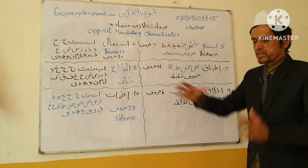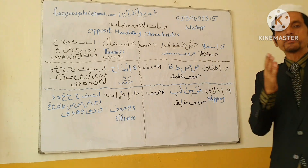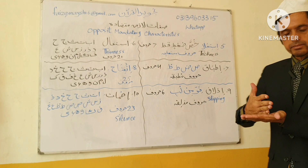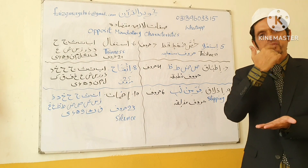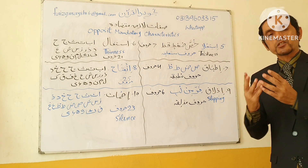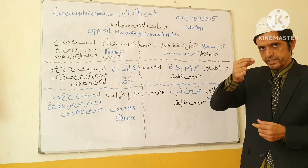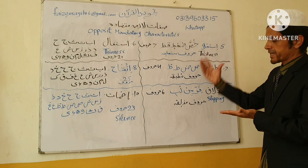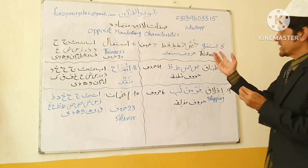Isti'ala is found in seven letters — the acronym is 'Khussah Doghtin': Kha, Swad, Daad, Ghayn, Ta, Qaf, Za. These are called Huroofi Musta'aliyah. Whenever we articulate these letters, the root of the tongue raises toward the palate, because of which the articulation of these letters becomes thick. For example, Kha, Swat. Think about the characteristic — the root of the tongue raises toward the palate, making these letters thick.